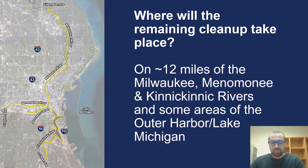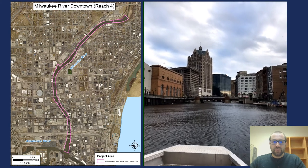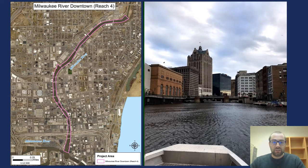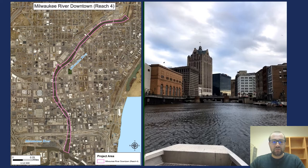Where will the cleanup take place? Cleanup will take place in the lower portions of the Milwaukee Estuary AOC. Previous cleanups occurred in Lincoln Park on the northern end of the AOC, as well as on the Little Menominee River and the Kinnickinnic River. The remaining locations shown on this map cover roughly 12 miles of river and some areas of the outer harbor and near-shore waters of Lake Michigan. The largest volume of contamination is found in the downtown stretch of the Milwaukee River, making up roughly 35 percent of the total volume to be remediated — a complex urban area with 18 bridges or road crossings, shoreline stability issues, river walks, private docks, and combined sewage outfalls.